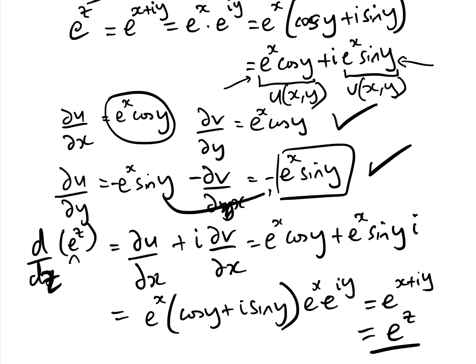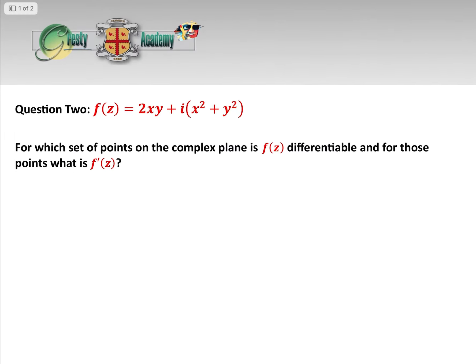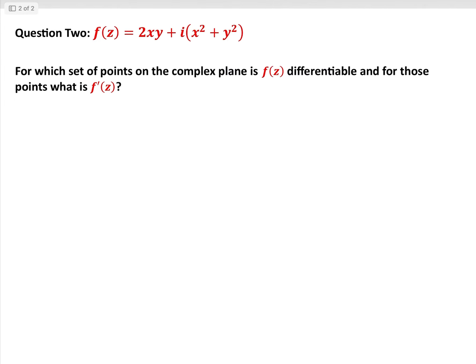So we have shown that the derivative with respect to z of the complex e^z is indeed e^z, which is what it is also in the reals. That's question one done. Now let's look at question two: f(z) = 2xy + i(x² + y²).